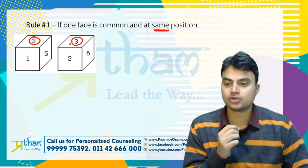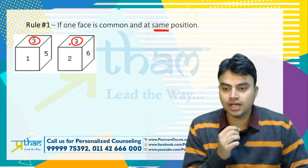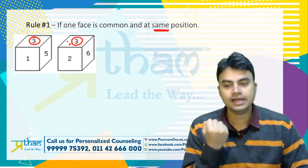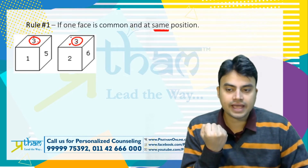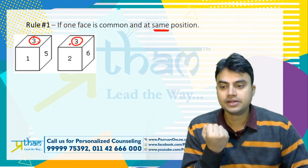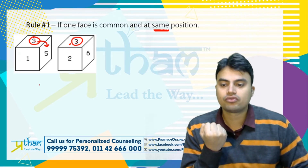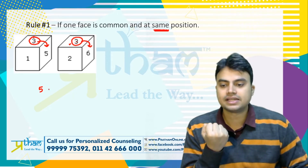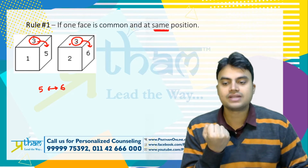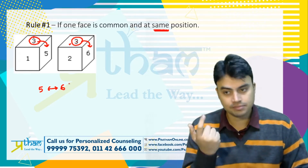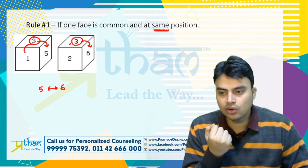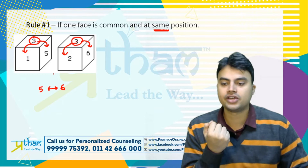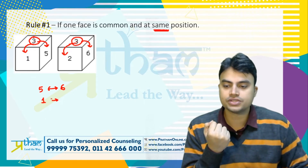So three is at the same position in both figures. The rule to apply is: look at what comes clockwise of the common face (three) in the first figure — that is five. And clockwise of three in the second figure — that is six. So five and six are opposite to each other. Similarly, anti-clockwise of three in the first figure gives one, and anti-clockwise in the second figure gives two. So one is opposite to two.